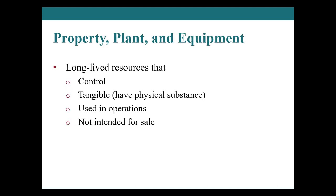Property, plant, and equipment — otherwise known as PP&E. These are long-lived resources that are controlled by the company and have tangible, that is physical, substance. If I knock the table, it has some substance — it's tangible. They're used in the operation of the business, so they are money makers; they are assets.